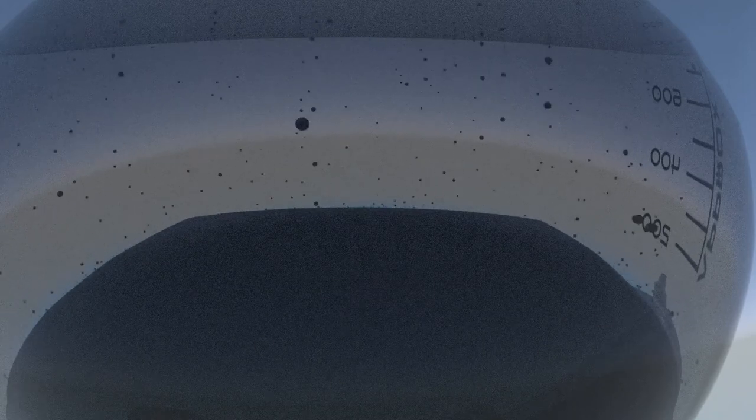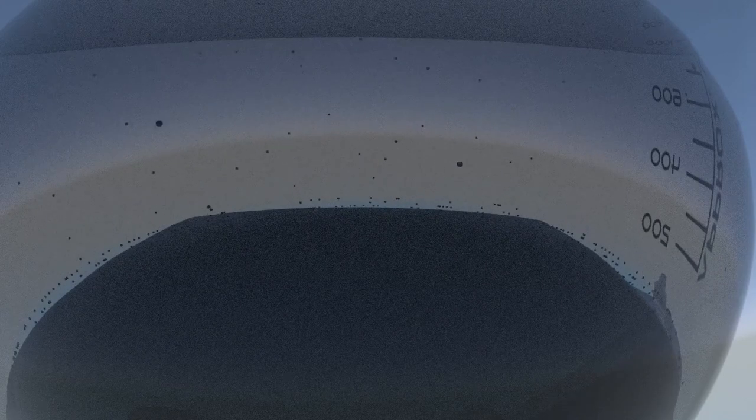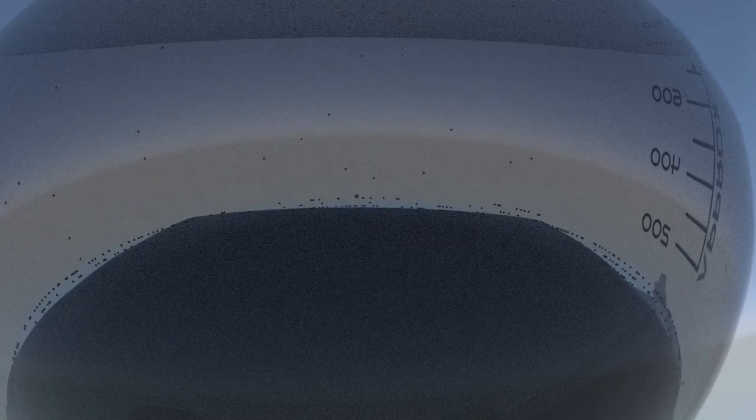Now, let's recover the gold. To do that, we need to convert the dissolved gold into solid particles, leaving the other metals dissolved. This is called selective precipitation.